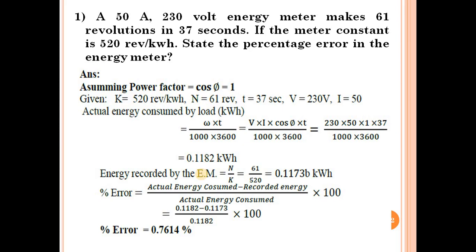So the first example: A 50 ampere, 230 volt energy meter makes 61 revolutions in 37 seconds. If the meter constant is 520 revolutions per kilowatt hour, state the percentage error in the energy meter. So I value is 50 ampere, voltage is 230 volt.